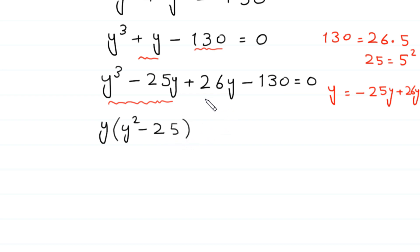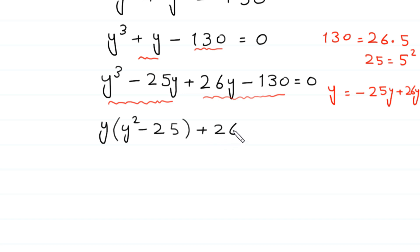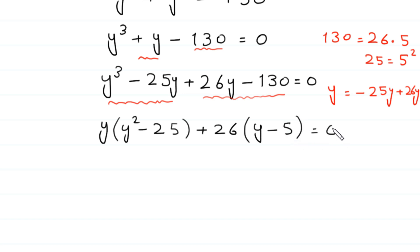And from the last two terms, 26y minus 130, we can factor out 26, giving y times (y squared minus 25) plus 26 times (y minus 5) is equal to 0.